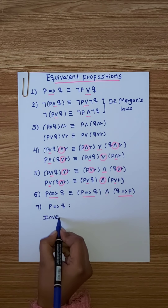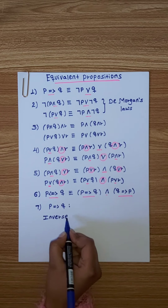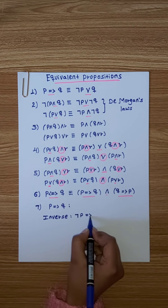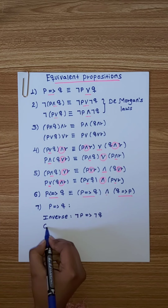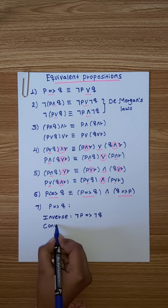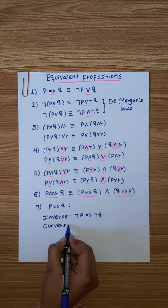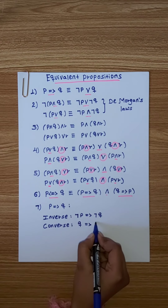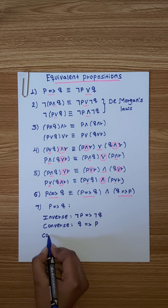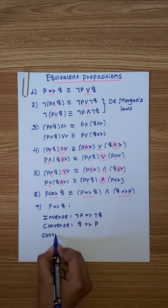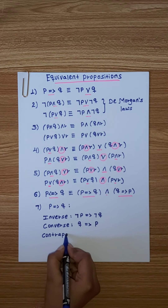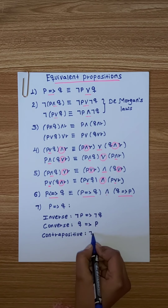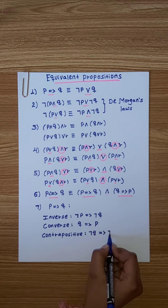So what I know: P implies Q is the contrapositive. Using the book, negation of P implies negation of Q is the inverse. Converse: Q implies P. Contrapositive: negation of Q implies negation of P.